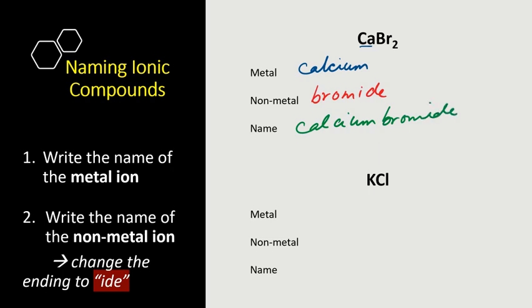Let's do another example. Write down the metal first. KCl is potassium. Write down the non-metal but change the ending to 'ide', chloride. The name is very simple: potassium chloride.